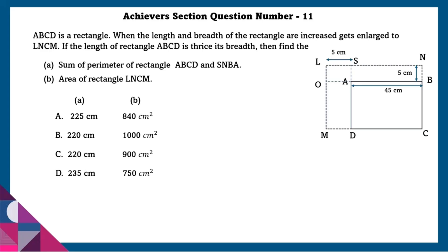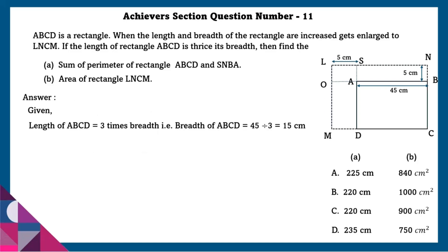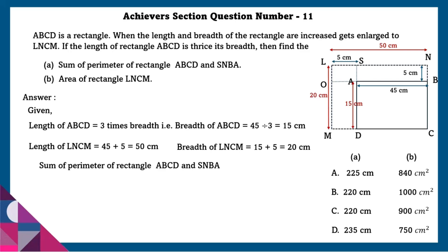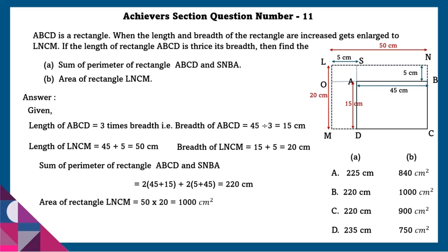Achiever section question number 11: ABCD is a rectangle. When the length and breadth are increased, it gets enlarged into rectangle LCM. If the length of ABCD is thrice its breadth, find the sum of the perimeters of rectangles ABCD and SBA, and the area of rectangle LCM. Given: length of ABCD equals 3 times the breadth, and breadth equals 45 divided by 3 equals 15 centimeters. Length of LCM equals 45 plus 5 equals 50 centimeters. Breadth of LCM equals 15 plus 5 equals 20 centimeters. Sum of perimeters equals 220 centimeters. Area of rectangle LCM equals 50 times 20 equals 1000 square centimeters.